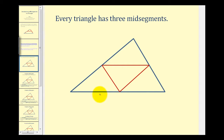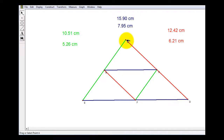If we constructed all three mid-segments of a triangle, it would look like this. There are a lot of properties that involve the mid-segments of a triangle. Let's take a look at an animation before we define them. Here we see a triangle with its three mid-segments. Notice how one side of the triangle and one mid-segment are color coded.